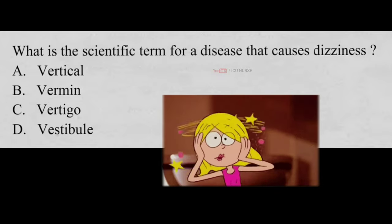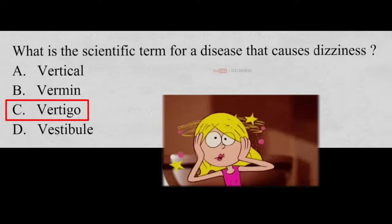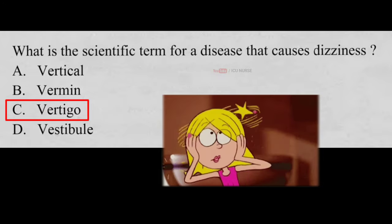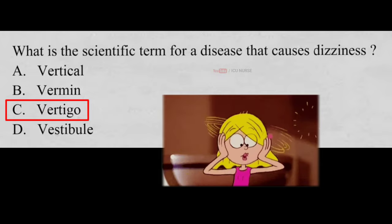What is the scientific term for a disease that causes dizziness? A. Vertical, B. Vermin, C. Vertigo, D. Vestibule. And the correct answer is C, Vertigo. Vertigo causes dizziness and makes you feel like you are spinning when you are not. The most common cause is a problem with your inner ear. Vertigo is a sensation that the environment around you is spinning in circles — it makes you feel dizzy and off balance. Vertigo isn't a disease; rather, it's a symptom of varying conditions.